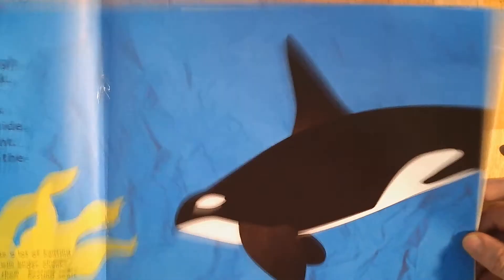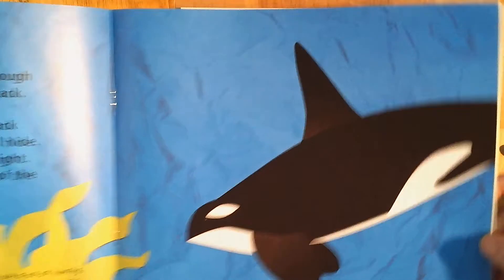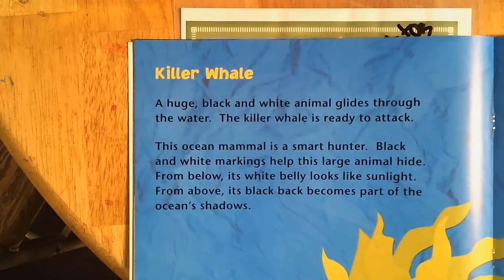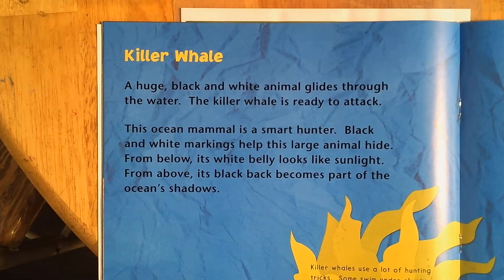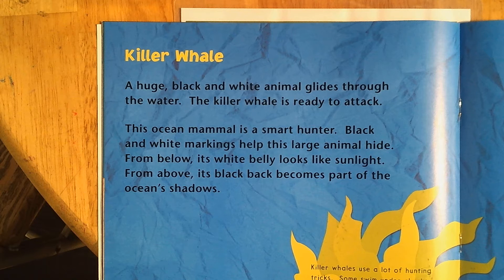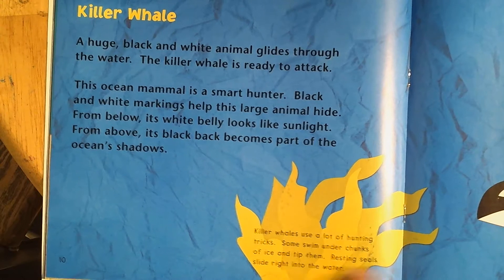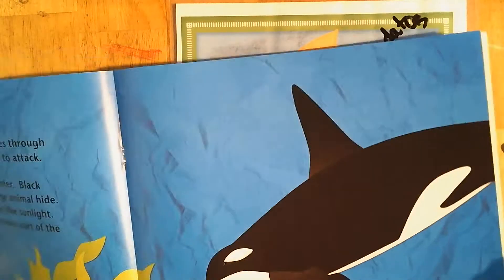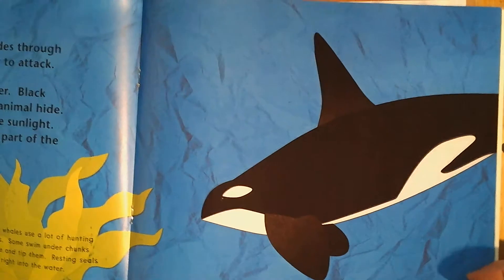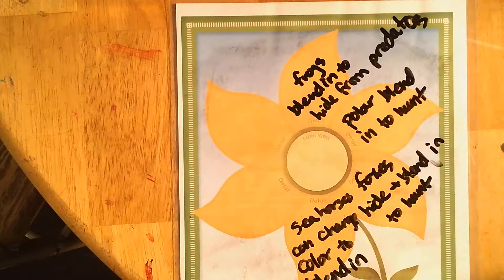Here is a killer whale, or an orca. A huge black and white animal glides through the water — the killer whale is ready to attack. Black and white markings help this large animal hide. From below, its white belly looks like sunlight; from above, its black back becomes part of the ocean's shadows. Killer whales use a lot of hunting tricks — some swim under chunks of ice and tip them so resting seals slide right into the water. That's another animal whose colors help it blend in so it can hunt — white with the sunlight and black with the dark ocean.